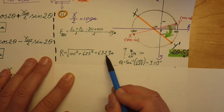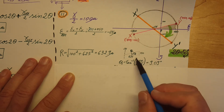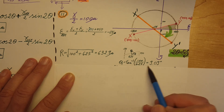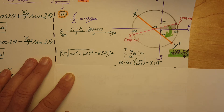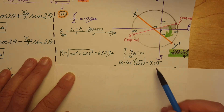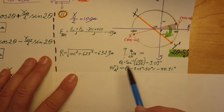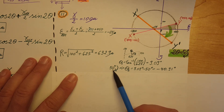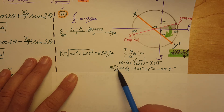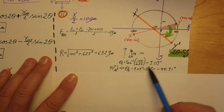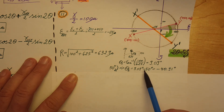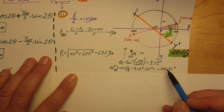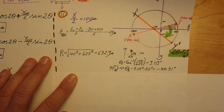Using inverse tangent of 100 over 625, we find theta 1 equals 9.09 degrees. They want us to rotate 50 degrees clockwise (double the 25 degrees for Mohr's circle). So we subtract 50 degrees: 9.09 minus 50 gives us a new angle of negative 40.91 degrees.